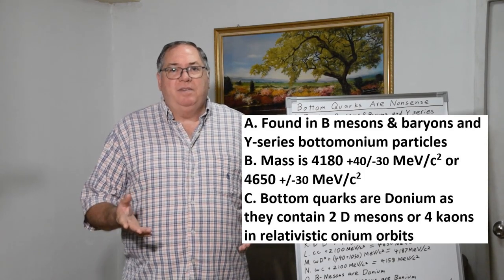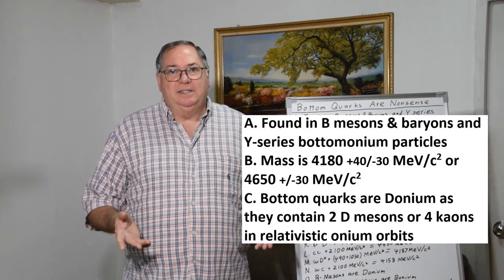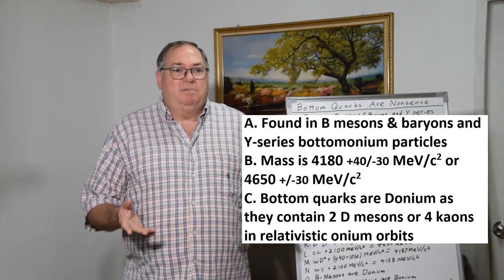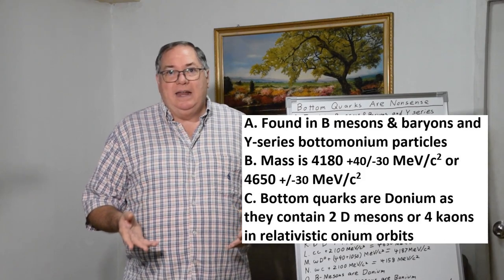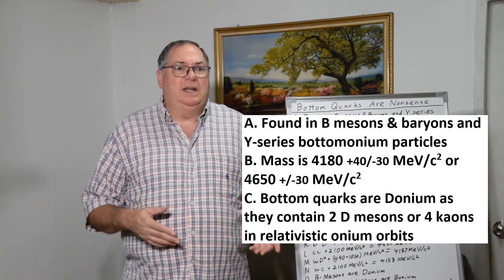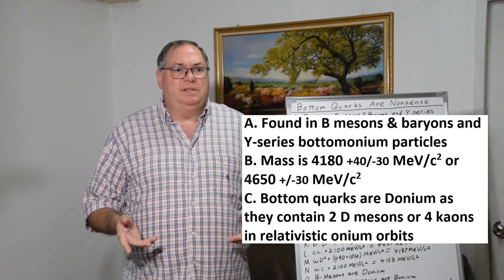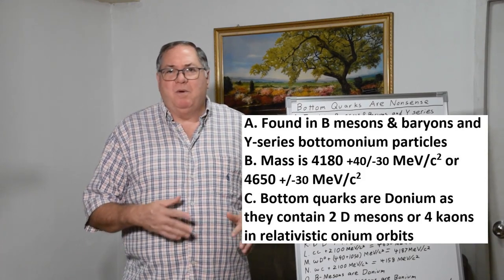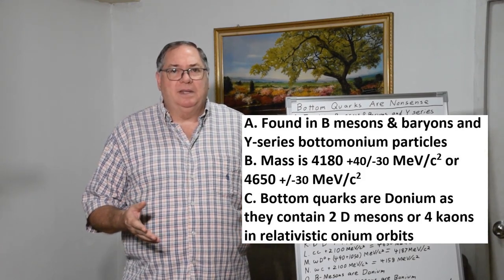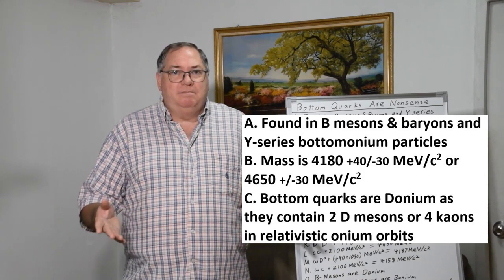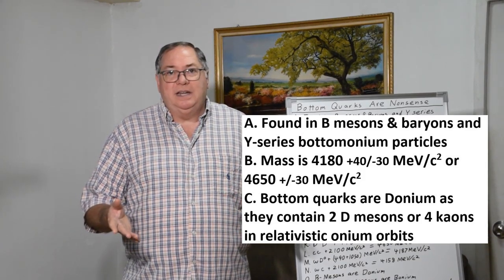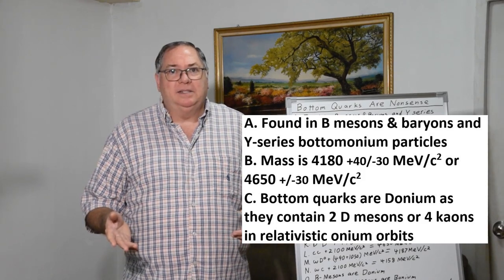Now there are two different estimated mass ranges: one is about 4180 MeV/c² and one's about 4650 MeV/c². I won't go into particulars except that the bottom quark actually covers a fairly wide range of masses.